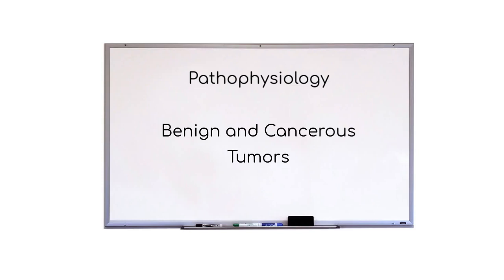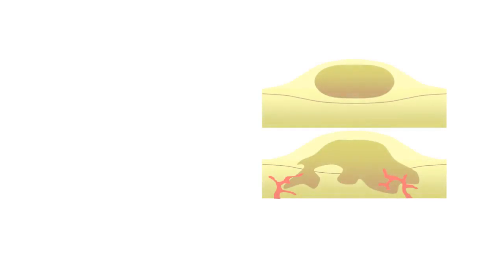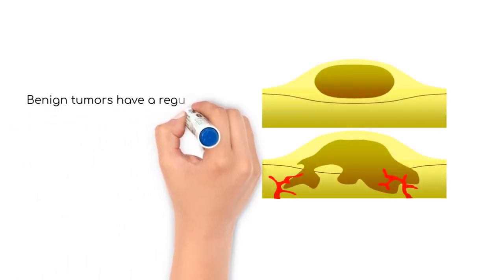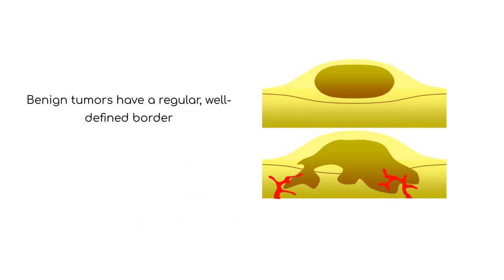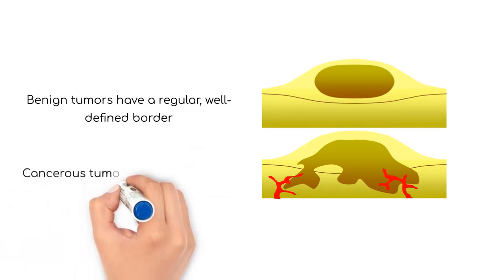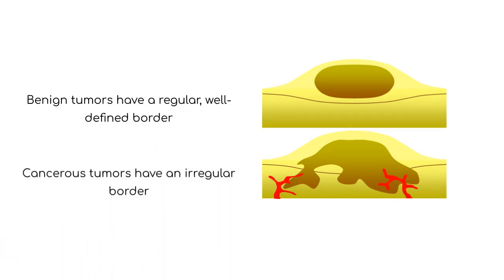Let's learn about benign versus cancerous tumors. There are important differences between benign and cancerous tumors. One of the most notable differences is that benign tumors have well-defined borders, while cancerous tumors have irregular borders.